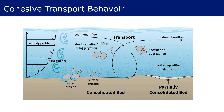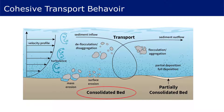Cohesive material on a channel bed that has been undisturbed for a period of time will form a consolidated surface that is quite resistant to erosion. When erosion does occur, it begins with surface erosion, where individual or small aggregates of material, called flocs, are entrained in the water column.